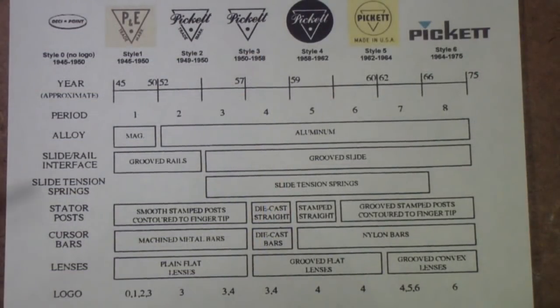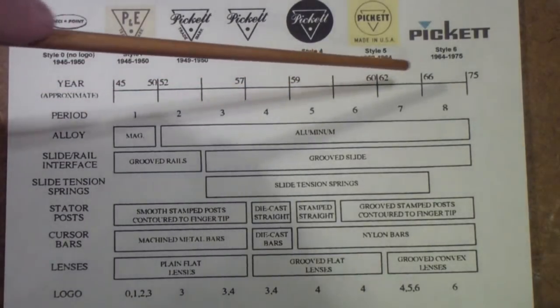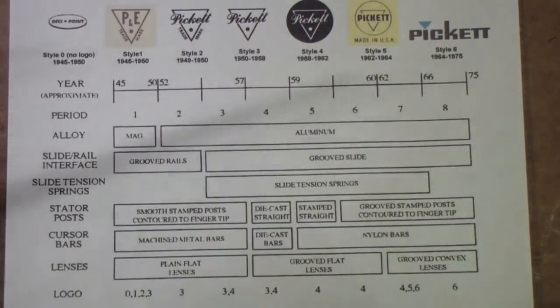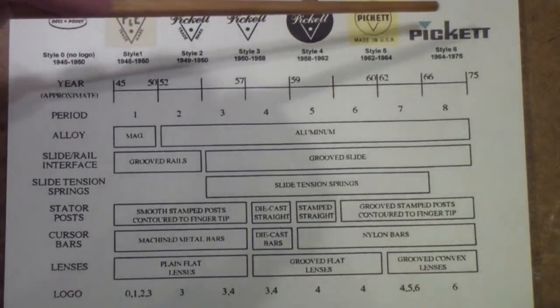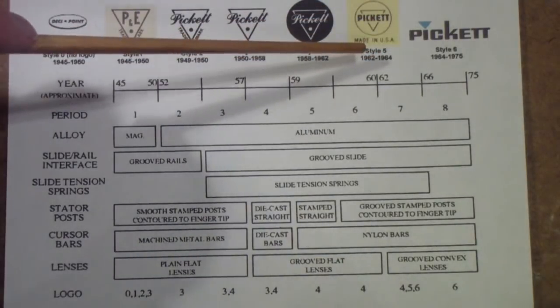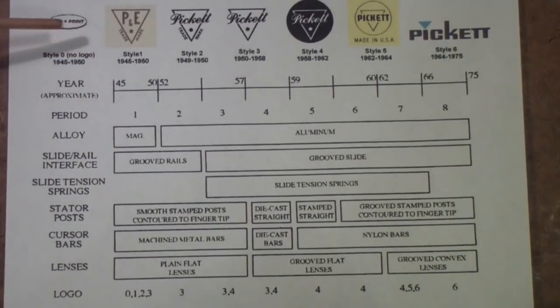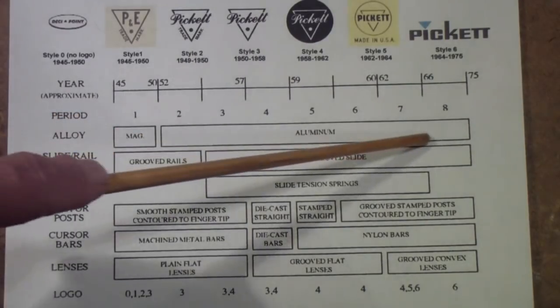This chronology shows a number of things. This is the year, and you'll notice that it runs from 1945 to 1975. By 75, Pickett and slide rules in general were pretty much in the past. People weren't buying new slide rules. Instead, they were buying electronic calculators. At the top are the various Pickett trademarks or logos. These appear on slide rules, and these are the approximate time periods when they use that particular logo. They have divided this up into what they call eight periods. But all of this is post-war.